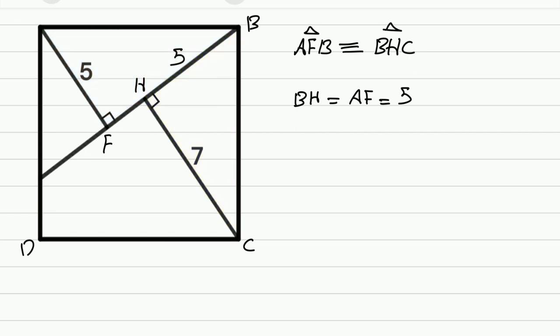We want to apply the Pythagorean theorem on this triangle BHC. BC squared equals BH squared plus HC squared. And BC squared is just the area of the square, right? So the area is BH squared, that's 5 squared plus HC squared, 7 squared, 25 plus 49 and that's equal to 74. That is the final answer.